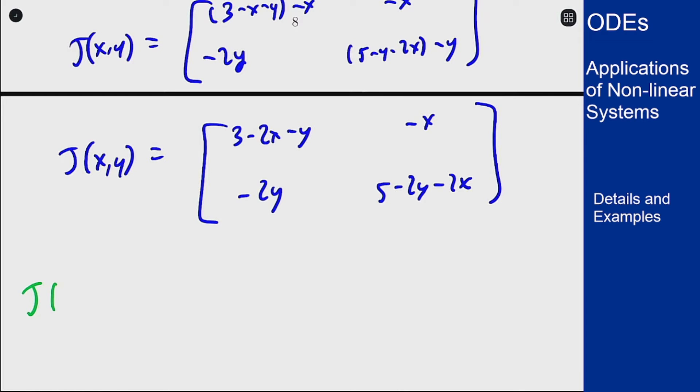So J at 0,0 is going to be 3, 0, 0, and 5. That's going to be a nodal source because the eigenvalues are 3 and 5 and so it's unstable.